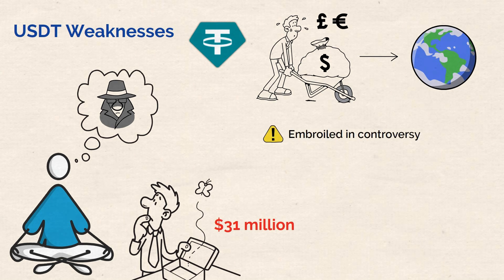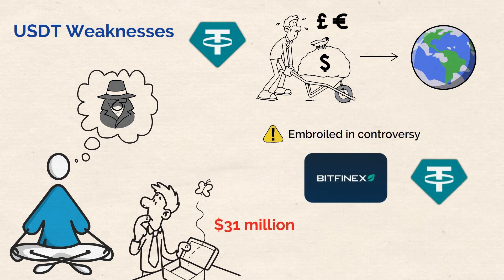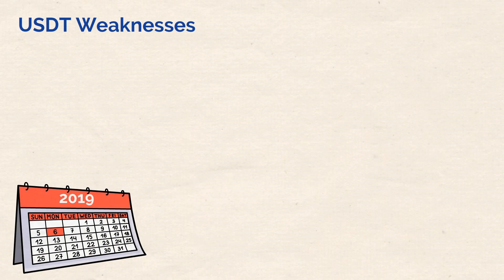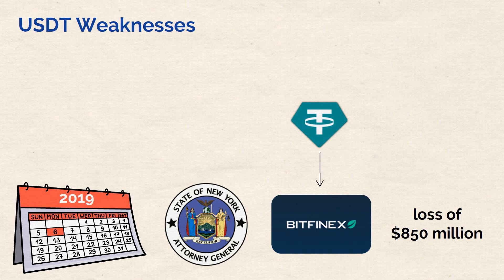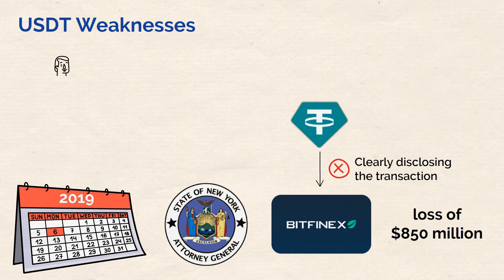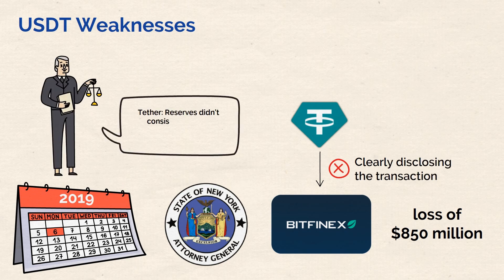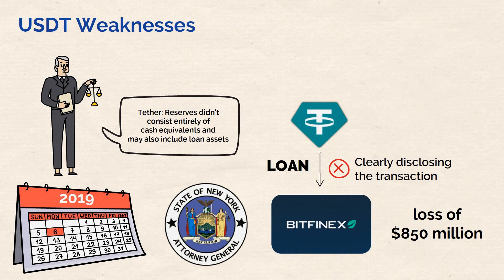Finally, Tether has also been embroiled in controversy because of its connection with the Bitfinex exchange. Tether and Bitfinex are both iFinex subsidiaries, making them related entities with a higher suspected probability of collusion. In 2019, the New York Attorney General's office accused Bitfinex of covering up a loss of 850 million dollars using funds from Tether. The accusation revolved around Tether allegedly transferring USDT to Bitfinex without clearly disclosing the transaction. In response, Tether revealed its reserves did not consist entirely of cash equivalents and may also include loan assets.